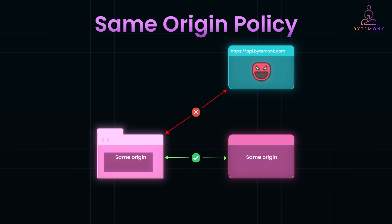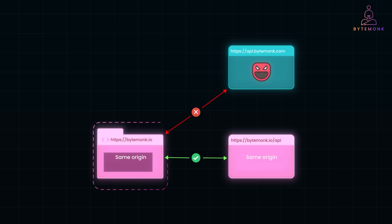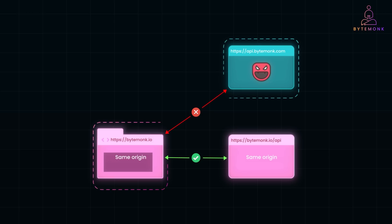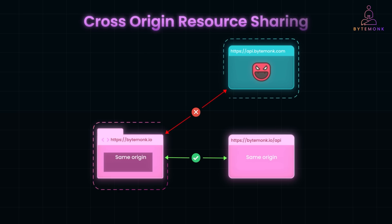For example, if your front-end is hosted at https://bytemonk.io, it can make requests to https://bytemonk.io. But if your front-end at https://bytemonk.io tries to fetch data from https://api.bytemonk.com, the browser blocks it because it's a cross-origin request.